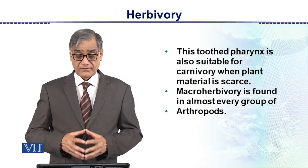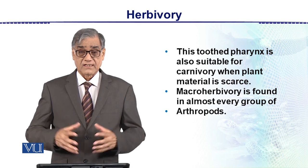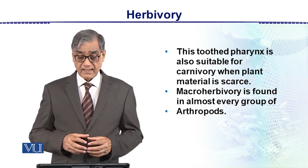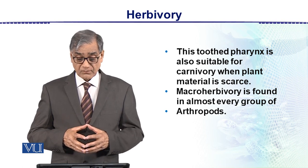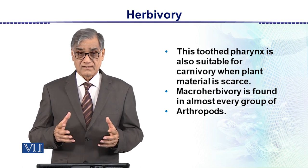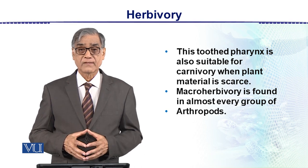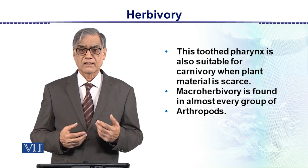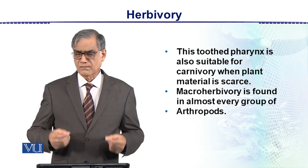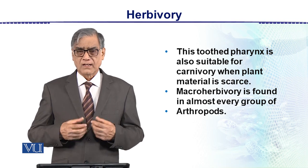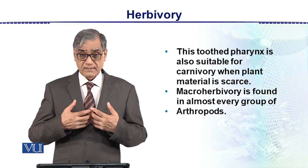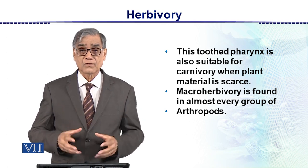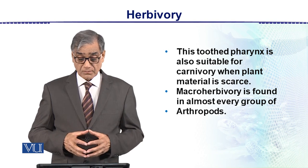This toothed pharynx is also suitable for carnivory when plant material is scarce. So polychaetes are omnivorous — they eat plants, and if plants are not available, they switch to a carnivorous mode and consume small animals as well.